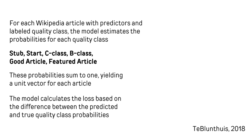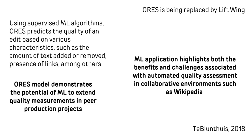The quality classes are categorized for each Wikipedia article, and the probabilities of belonging to these classes are estimated and summed into one unit vector. ORES predicts the quality of edits by analyzing several characteristics, including textual modifications, hyperlinks, among others. This approach leverages machine learning to automate quality assessment in Wikipedia, Wikidata, and other Wikimedia projects.